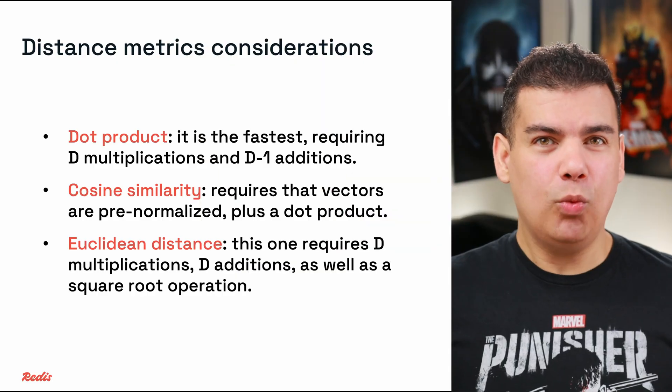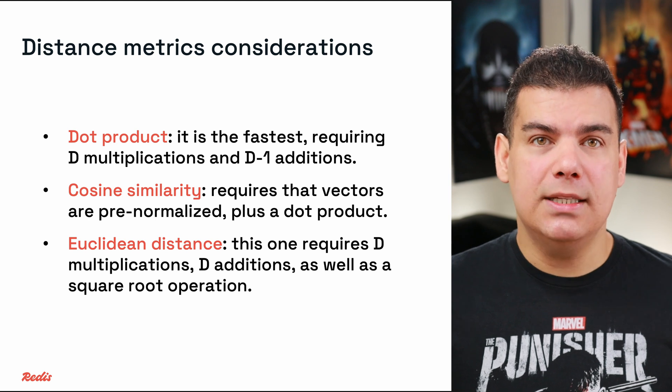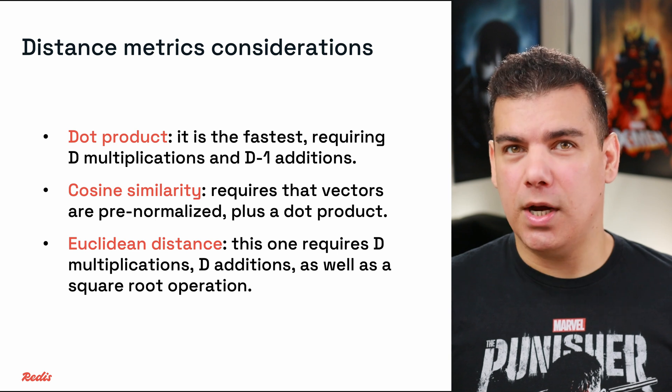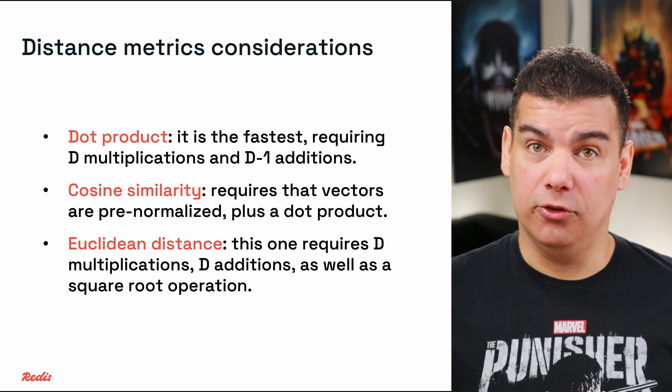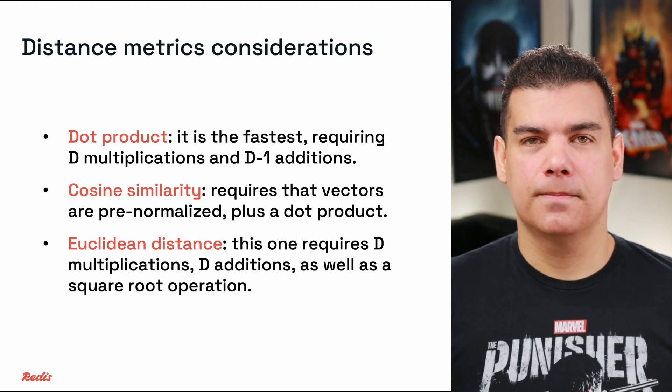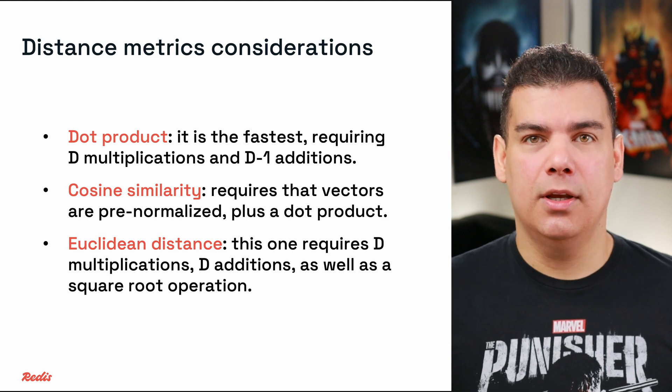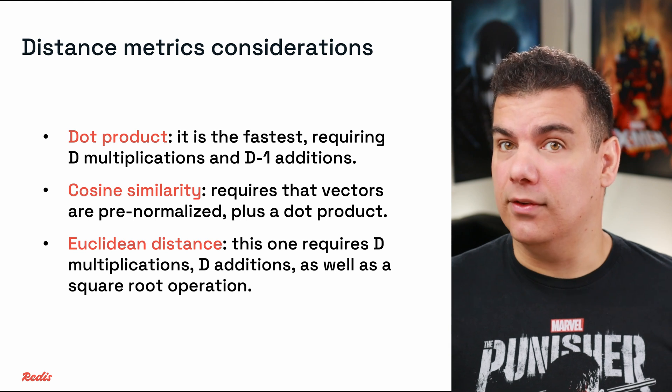Distance metrics and dimensionality define how similarity is calculated and how much computation is required. These fundamental aspects determine the computational load of each query and directly influence search speed. Each distance calculation has different computational costs. The first one is dot-product — the fastest, requiring d multiplications and d-1 additions. Cosine similarity requires normalization plus dot-product, which is slower unless vectors are pre-normalized. Euclidean distance requires d multiplications, d additions, and a square root operation. The performance gap is measurable and scales with dimensionality and dataset size.